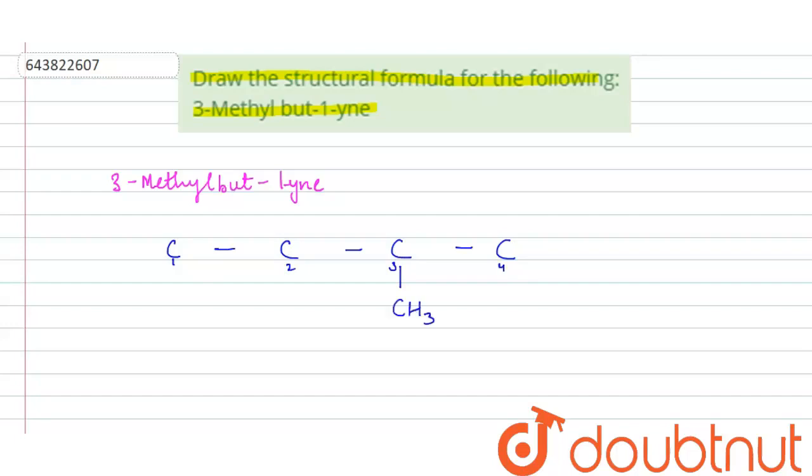That is CH3. Also, if we see, there is -yne, so this is an alkyne. Yne is used for alkyne, and one at first carbon. There is an -yne, that is a triple bond is there on the first carbon.